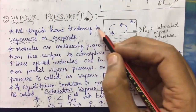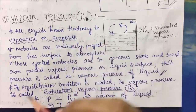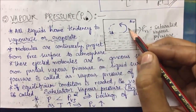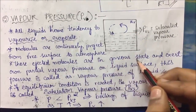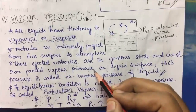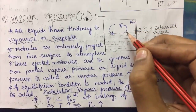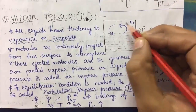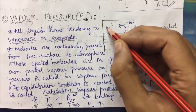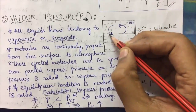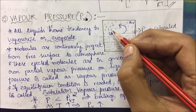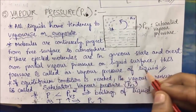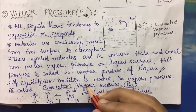From the notes: all molecules have a tendency to vaporize or evaporate. Molecules are continuously ejected from the free surface to the atmosphere. These ejected molecules are in a gaseous state and exert partial pressure on the liquid surface. This partial pressure is called vapor pressure of the liquid.